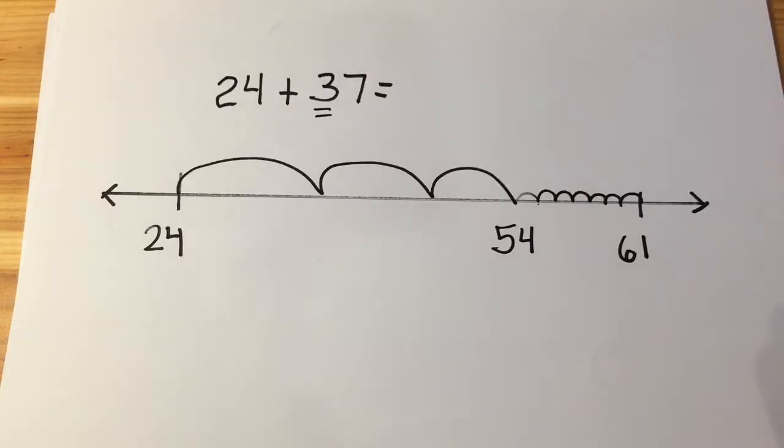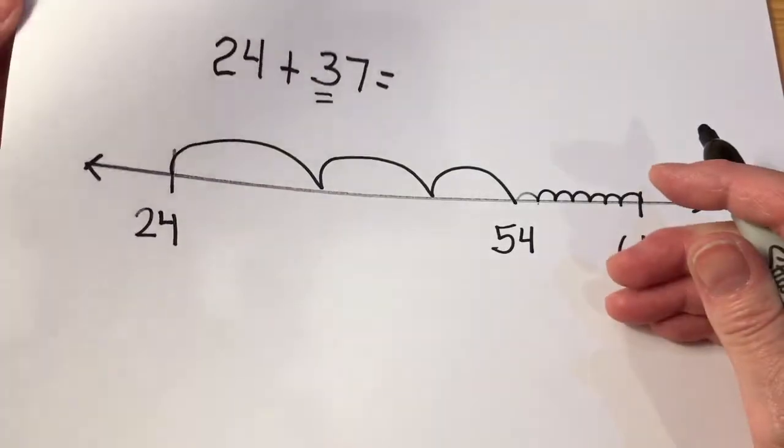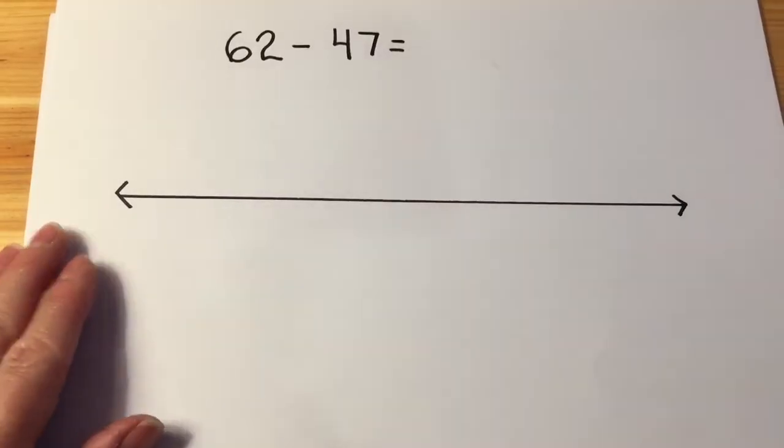That's the beginning way that we would use an open number line to help us as we add.